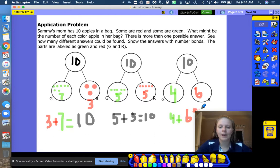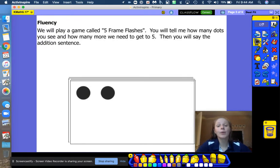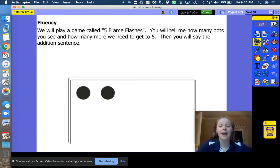Okay. Alright. Six plus four equals 10. Great job. Alright. We are going to play five frame flashes. You will tell me how many dots you see and how many more we need to get to five. Take a look at the first one. How many dots? Two. How many more to get to five? Two plus three equals five. We need three more dots. Good.